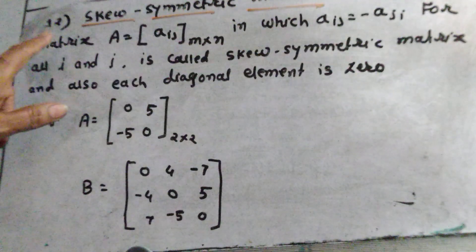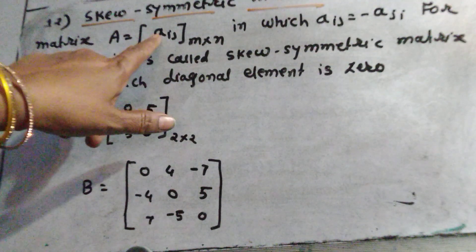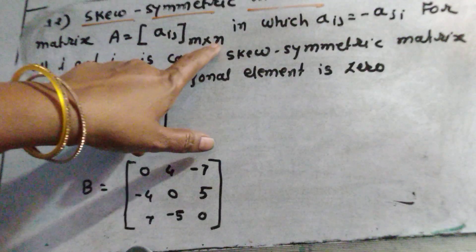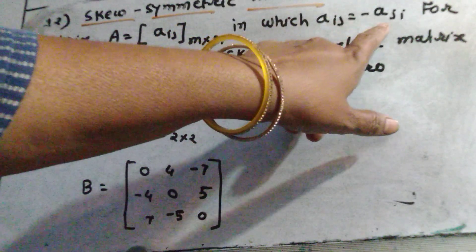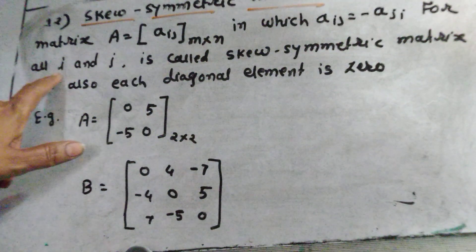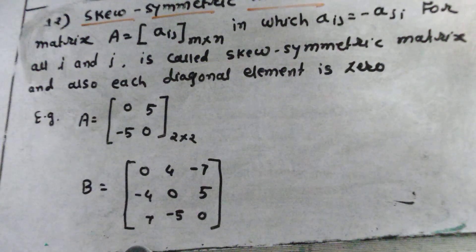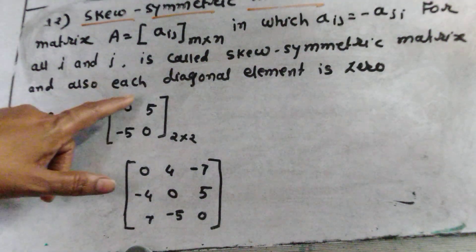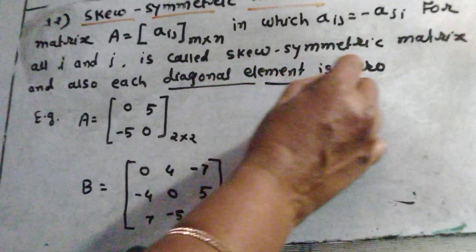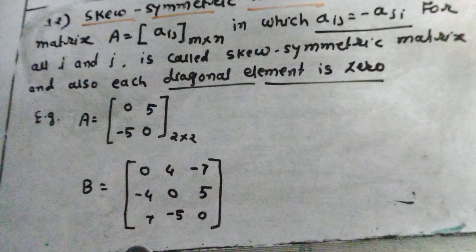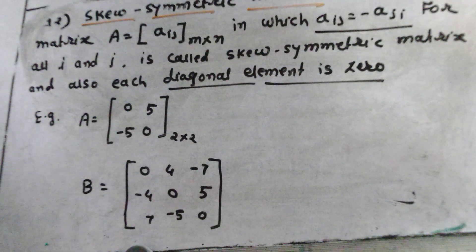A square matrix A = [aij]m×n in which aij = -aji for all i and j is called a skew-symmetric matrix, and also each diagonal element is zero. So aij = -aji.